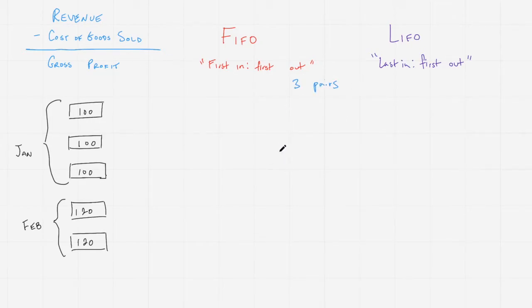If we are running a business and we're not using what's called specific identification, when I go into my inventory closet and take out any three pairs of shoes, I might not know which ones I'm picking because they're all identical. Even though some of them cost more than the others, the models themselves are identical. When I pick three pairs to sell to a customer, I don't know if I'm picking from the $120 shoes that I got in February, or from the $100 pairs that I got in January, or some combination. We have to make some assumptions.